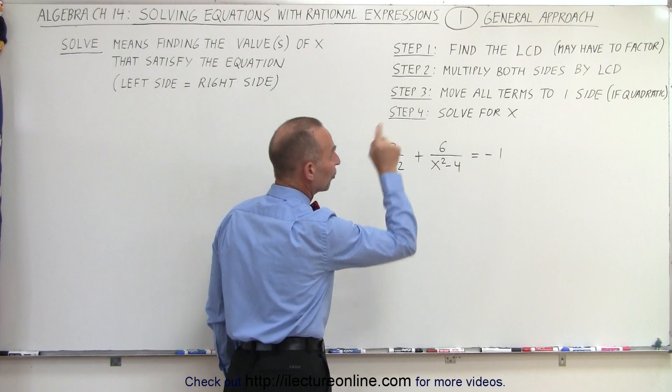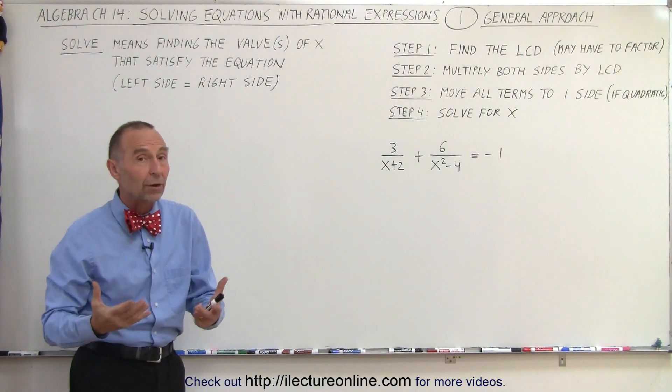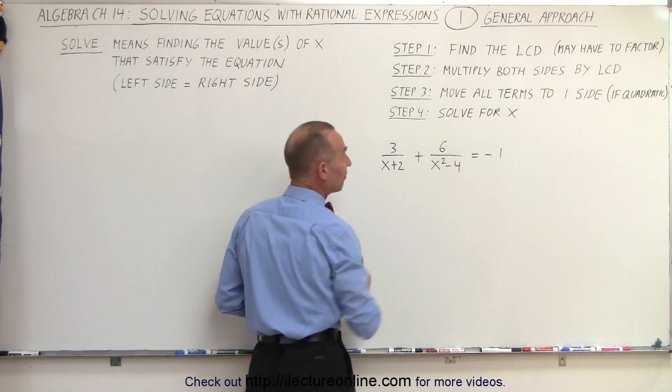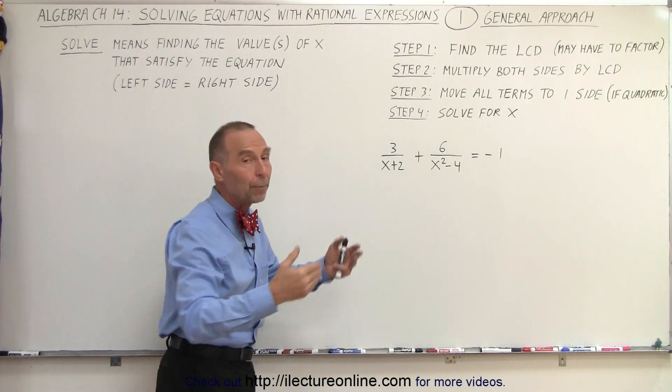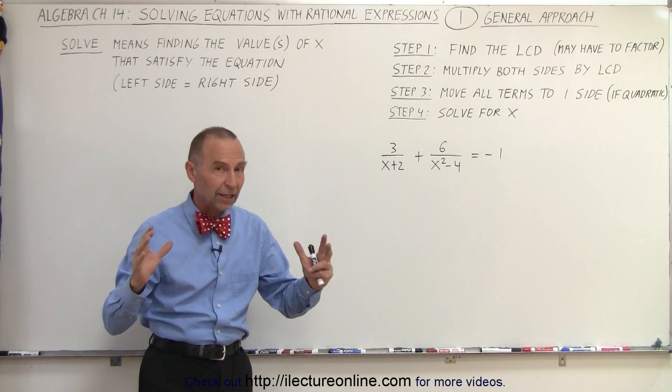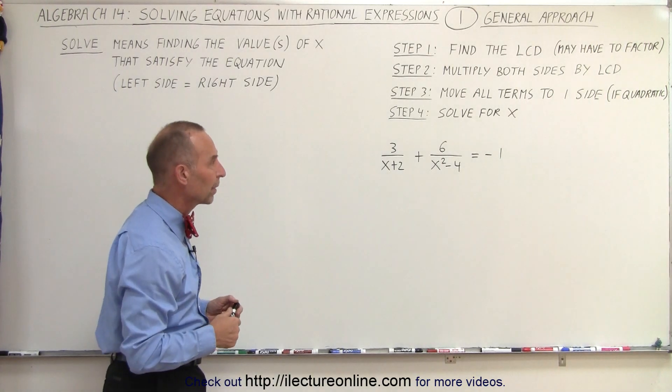And here are the steps that we should follow. With rational expressions, we first want to find the lowest common denominator, which may require us to factor something first. In this case, the x squared minus 4 should be factored. Then we multiply both sides by the LCD. Then we move all the terms to one side if we have a quadratic expression, which typically would be the case. And then we solve for x.